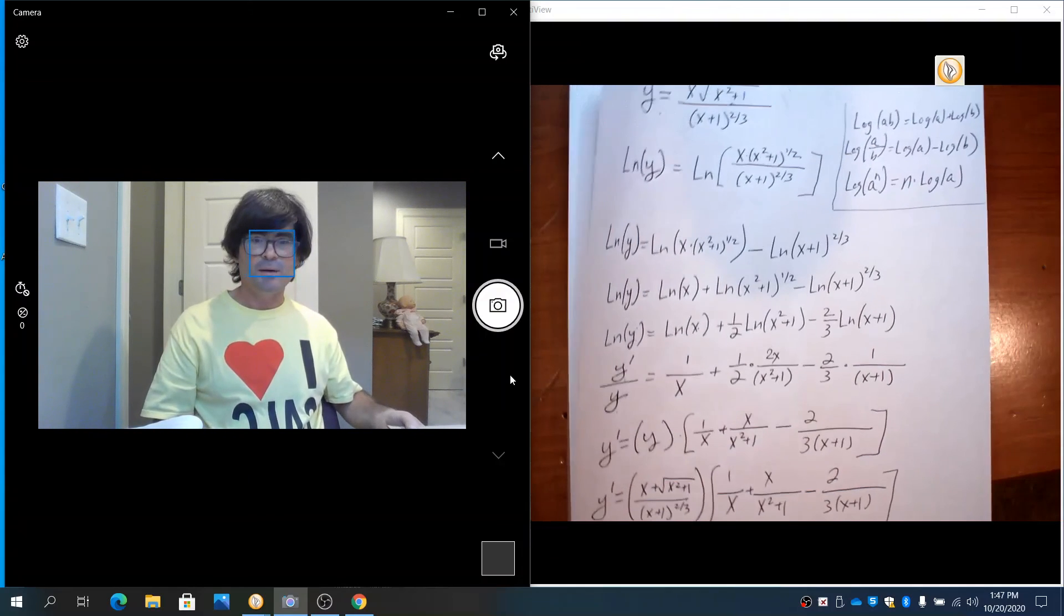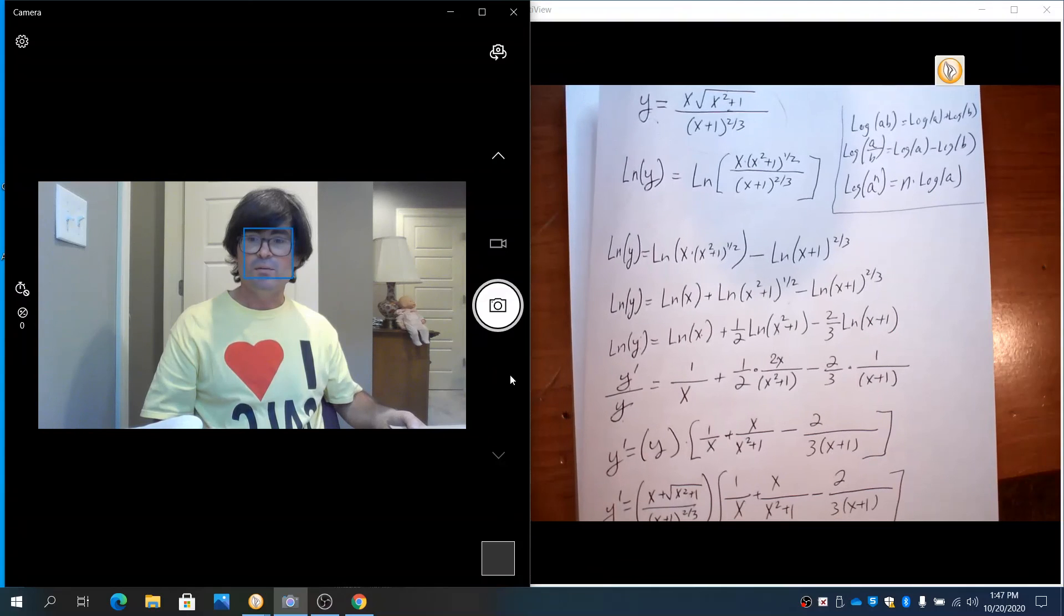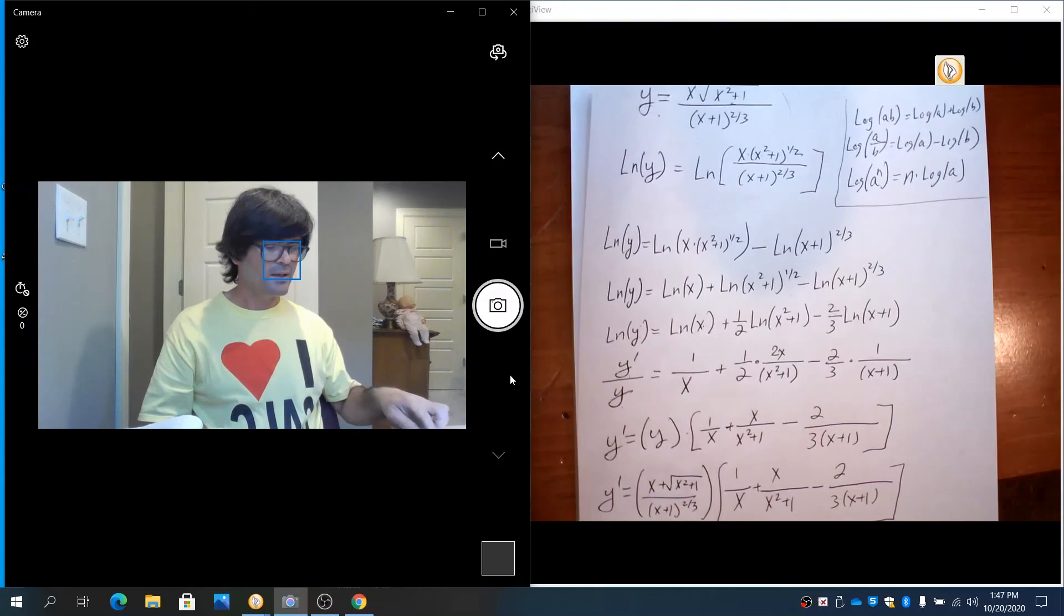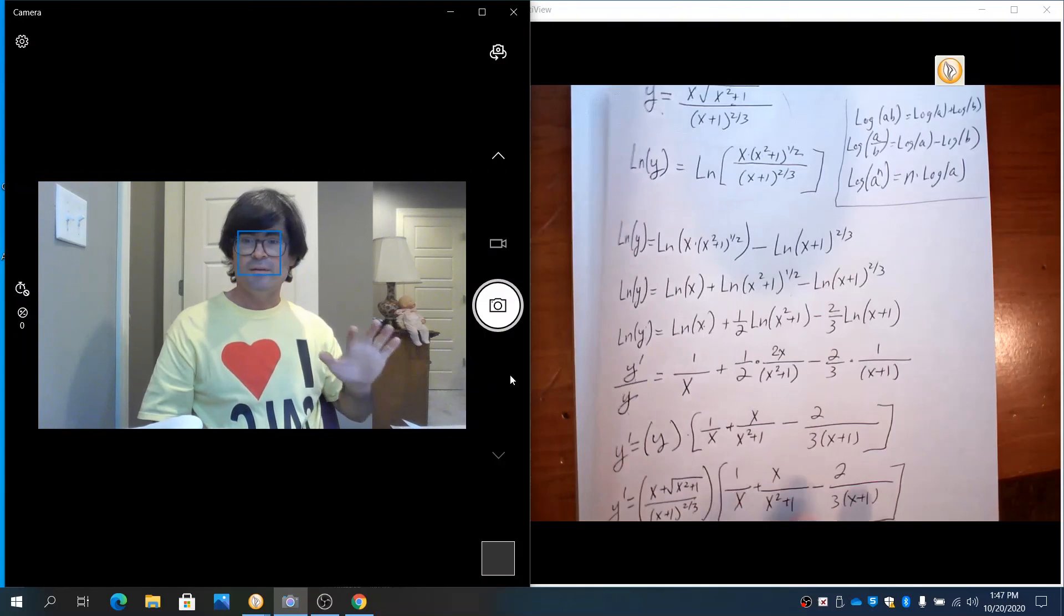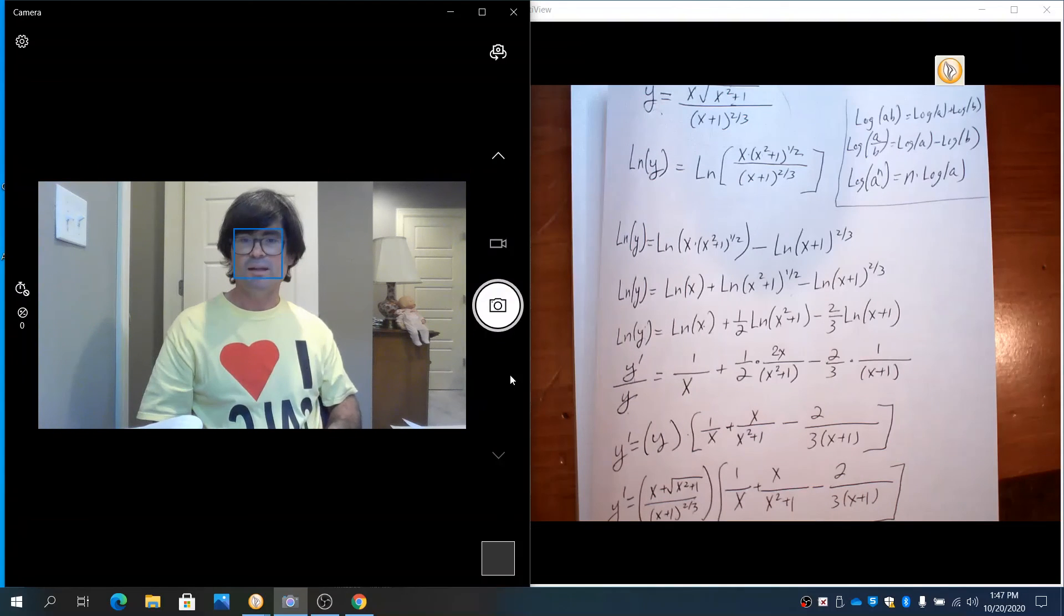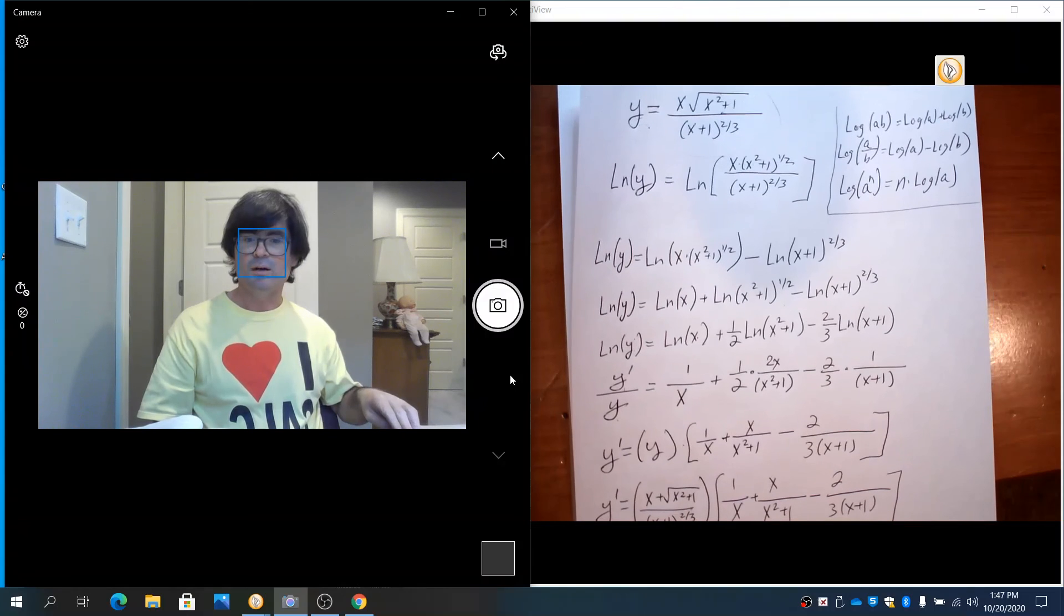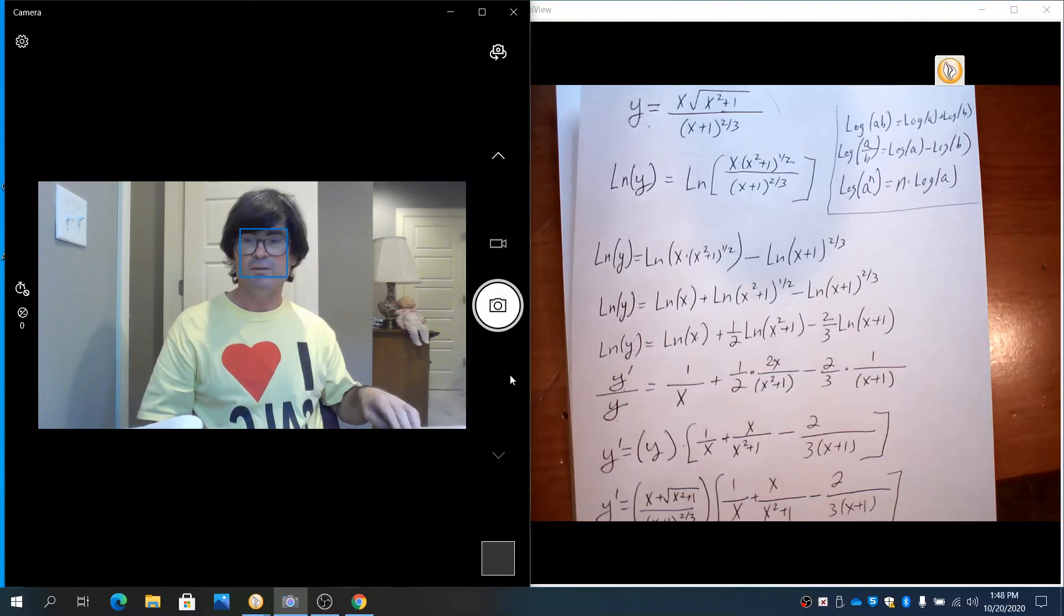And as I said, you know, to do that by hand with the quotient rule and the product rule and two chain rules, that would be absolutely awful. So imagine trying to get all this correct, I can't imagine. So anyway, that's a way that you can utilize the derivative of logs along with the log properties to take the derivative of really awful things that don't seem to have any other good avenues.